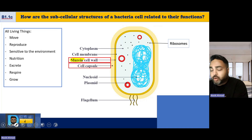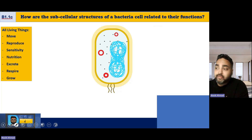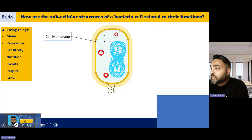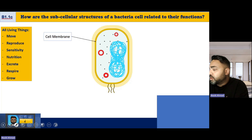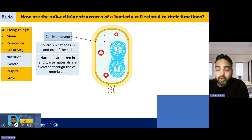Bacterial cells contain things relatively common to other cells. The cell membrane controls what goes in and out of the cell — nutrients are taken in and waste materials are excreted through the cell membrane. It doesn't have lungs for exchange processes; it has to do it all through the cell membrane. The blue color of the cell membrane links to two processes of MRS NERG which bacterial cells need to carry out.